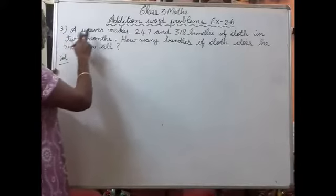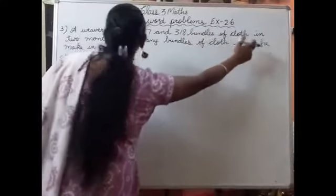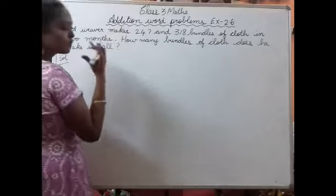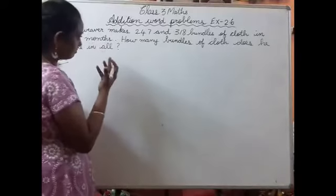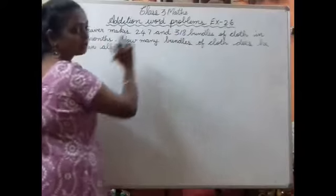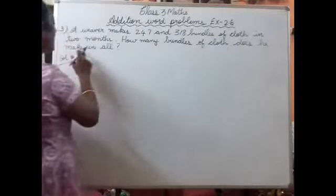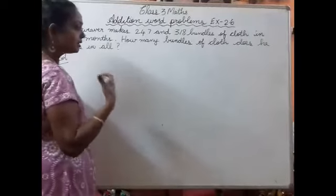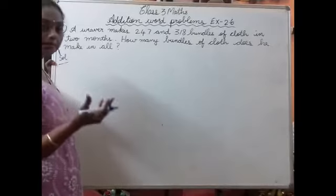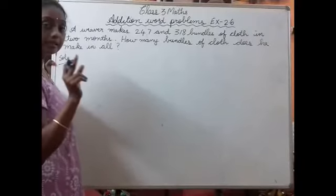Question number 3. A weaver makes 247 and 318 bundles of cloth in 2 months. Do mahine mein kitni bundles of cloth weaver ne banaya hai - 247 and 318 bundles of cloth. We have to find how many bundles of cloth he makes in all. Addition ke liye hints hain: altogether, sum, total - yeh sab aane se aapko add karna hai. This is the hint.